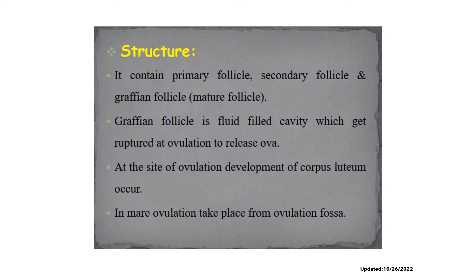In terms of the structures found in the ovary, in the cortex we primarily have the follicles — the primary, secondary, and Graafian or mature follicle. The Graafian follicle is a fluid-filled cavity, which ruptures at ovulation to release the ovum. The fluid-filled cavity is known as the antrum. At the site of ovulation, development of corpus luteum occurs. When the mature follicle ruptures, it first becomes a corpus hemorrhagicum, then a corpus luteum, and finally a corpus albicans. In the mare, ovulation takes place only at one site: the ovulation fossa.